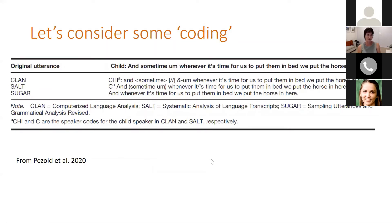Here's a brief example of what coding looks like, straight from this article. One line where the child says, 'and sometimes whenever it's time for us to put them in bed, we put the horse in here.' This is how you would code that in CLAN, this is how you would do it in SALT — the child's line — and this is how you would do it in SUGAR. So that is what we mean by coding: what brackets and what little identifiers do we use?